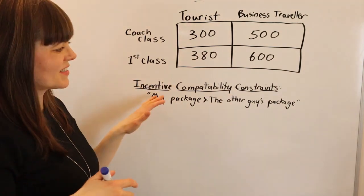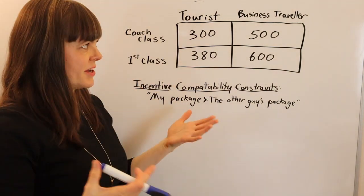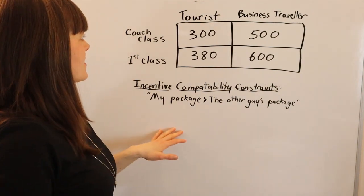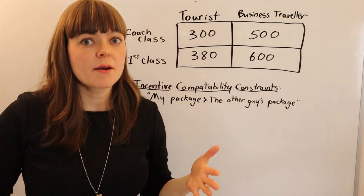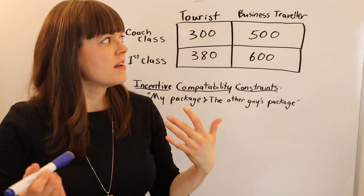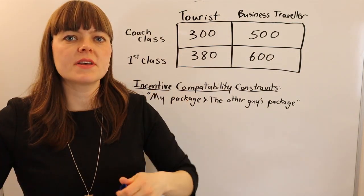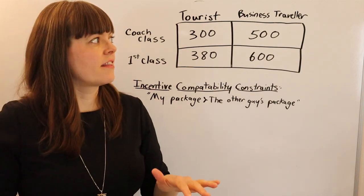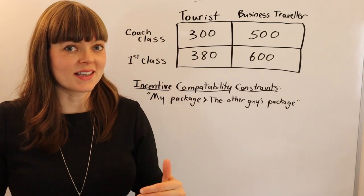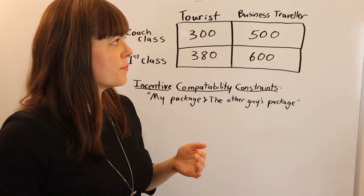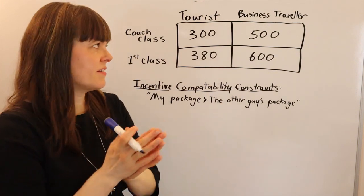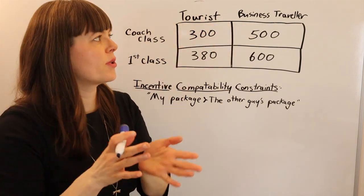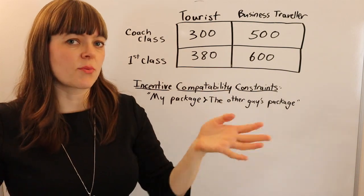I'm going over an incentive compatibility constraint and participation constraint problem from the Hal Varian chapter, and this particular example is an airline pricing their airline tickets. It's helpful to frame this as principal-agent, in which case we have a principal who's the airline, making a decision about pricing — that's their choice variable — in order to incentivize two different types of customers: tourists and business class people to choose the packages designed for them.